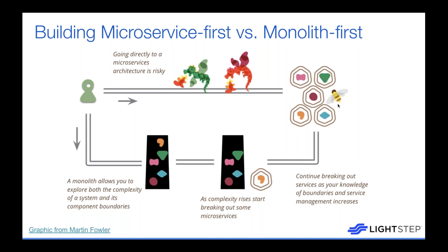This brings to mind the concept of YAGNI — You Aren't Gonna Need It. Sometimes building microservices immediately, especially several at once that interact with each other, is not the way to go, because you actually aren't going to need that level of complexity yet. You may not fully understand the boundaries and interactions your different features are going to have.